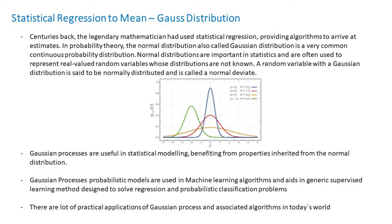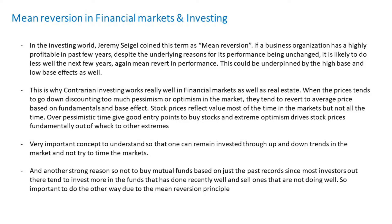Gaussian processes are useful in statistical modeling, benefiting from properties inherited from the normal distribution. In today's world, especially in artificial intelligence and machine learning algorithms, Gaussian process probabilistic models are used thoroughly. It also aids as a generic supervised learning method designed to solve regression and probabilistic classification problems. In machine learning there is a lot of continuous regression, distributions, and probabilistic classification done especially in supervised learning methods. Mean reversion is nothing but regressing back to the mean — and now we will see how this impacts financial markets and stock market performance.